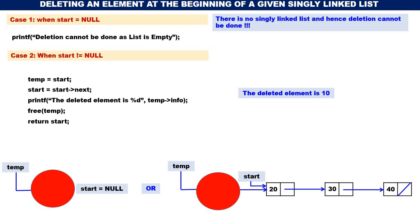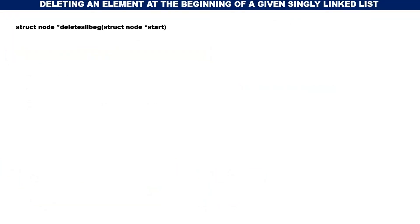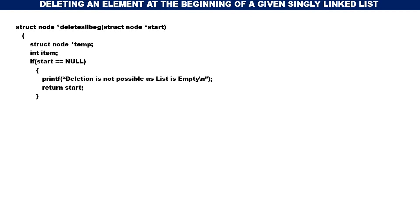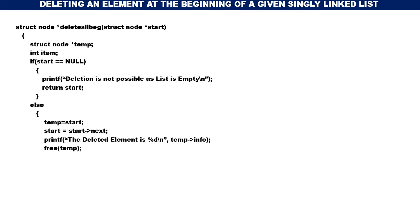Let us go directly to the function. The function is named delete_sll_beg(), meaning delete at the beginning of a singly linked list. The parameter required is the start address of the linked list, and it returns a pointer of type struct node. We have a temporary pointer and int item. If start is NULL, print deletion not possible as list is empty and return start. Else, temp = start, start = start->next, print deleted element as temp->info, free(temp), then return start.